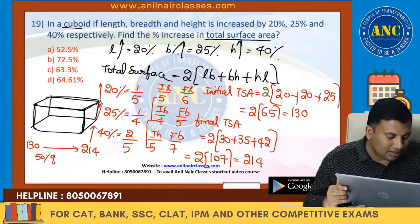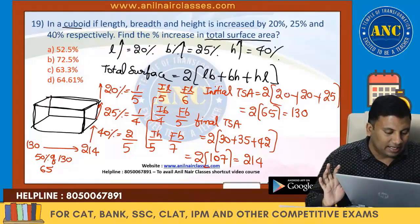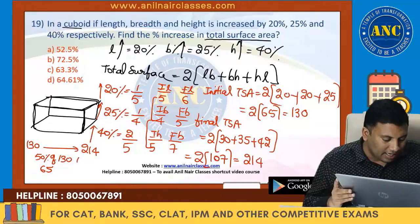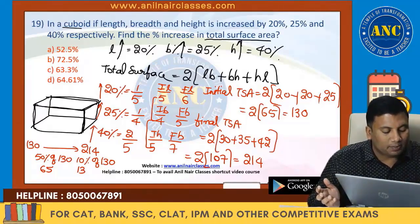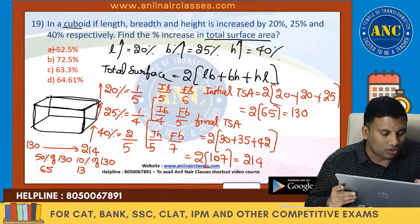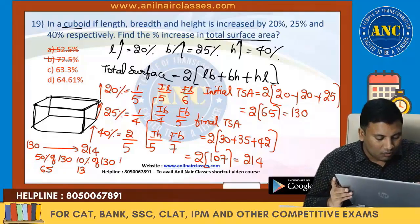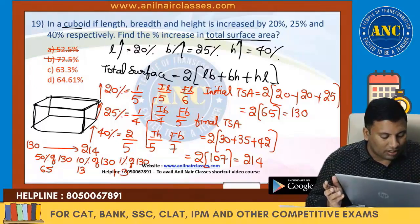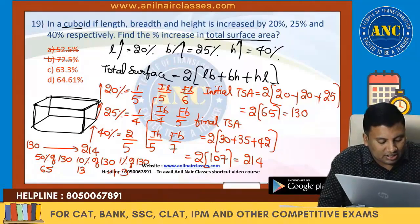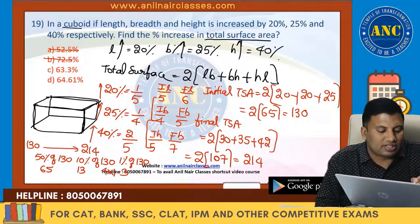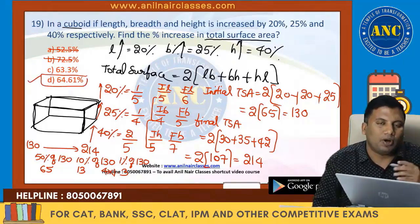50% of 130 is 65; 130 + 65 = 195. 10% of 130 is 13; 65 + 13 = 78; 78 + 130 = 208. It's coming closer. 1% of 130 is 1.3. So the remaining 6 gives about 4-point-something percent. The answer is approximately 64.61%.